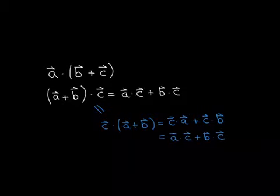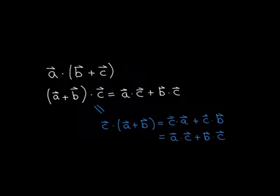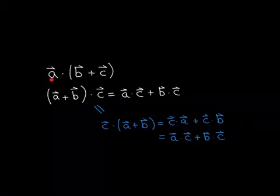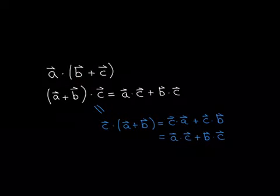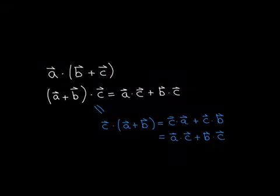We're very close to showing the formula that we want to show. Just before we get there, let me point out that distributivity works on the left, but it also works on the right. In the previous part of the video, we saw left distributivity — where the dot product is on the left of the addition: A dotted with B plus C is equal to A dot B plus A dot C.